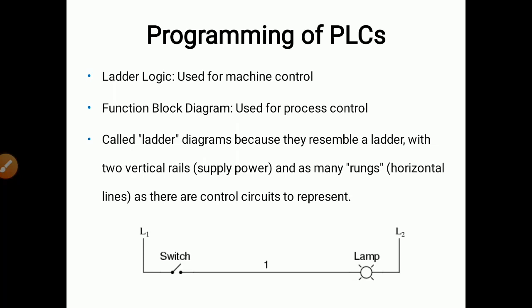In this diagram, L1 and L2 are the two vertical lines, called supply power lines. Between these two vertical lines there is one horizontal line called a rung. There is only one rung shown right now. The rung consists of input and output devices — on the left hand side a switch is provided as the input device, and on the right hand side a lamp is shown as the output device. This is the ladder diagram.